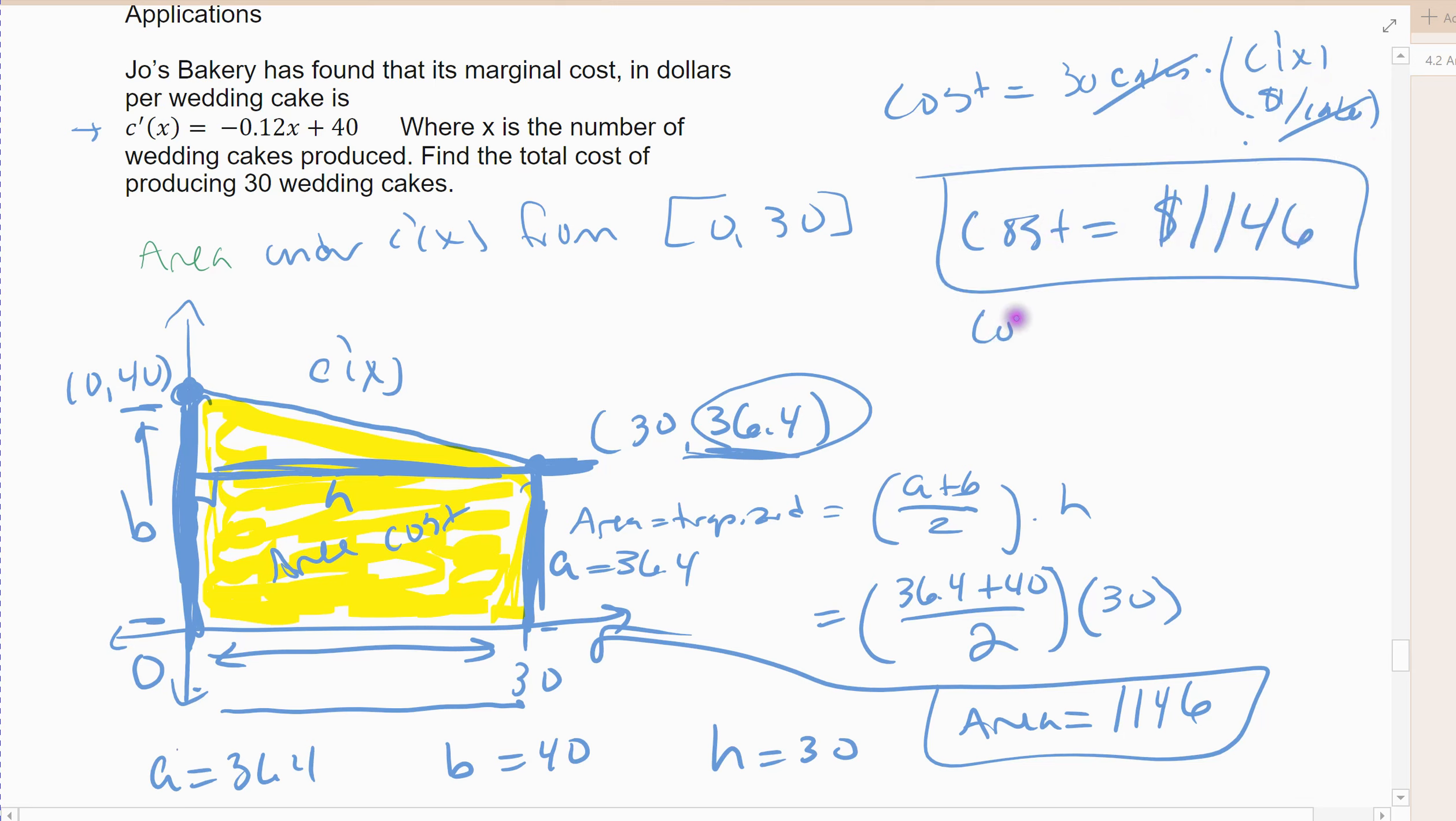And so it costs $1,146 to make 30 cakes. All right, and so that's the geometric application example.